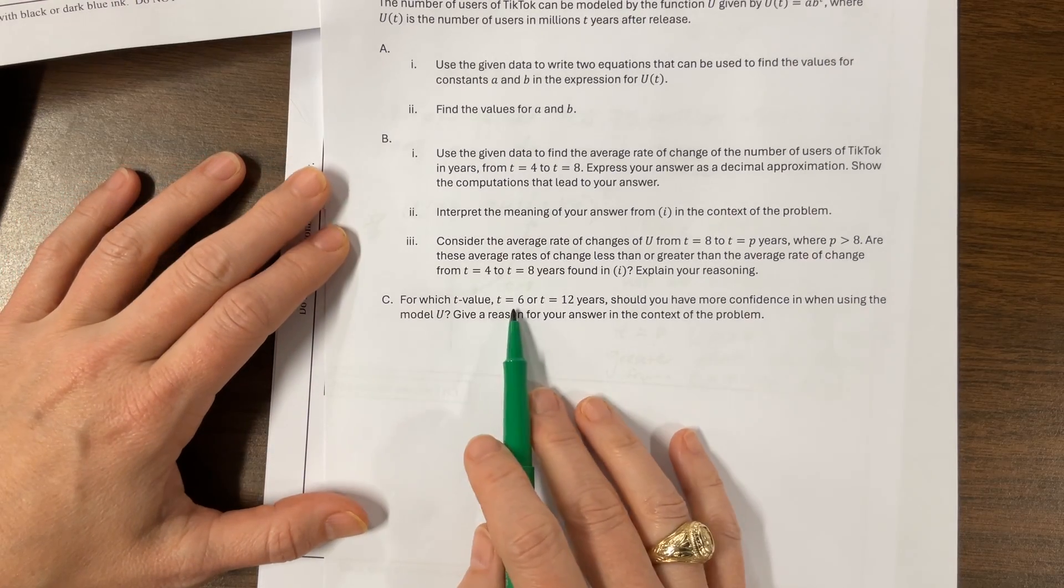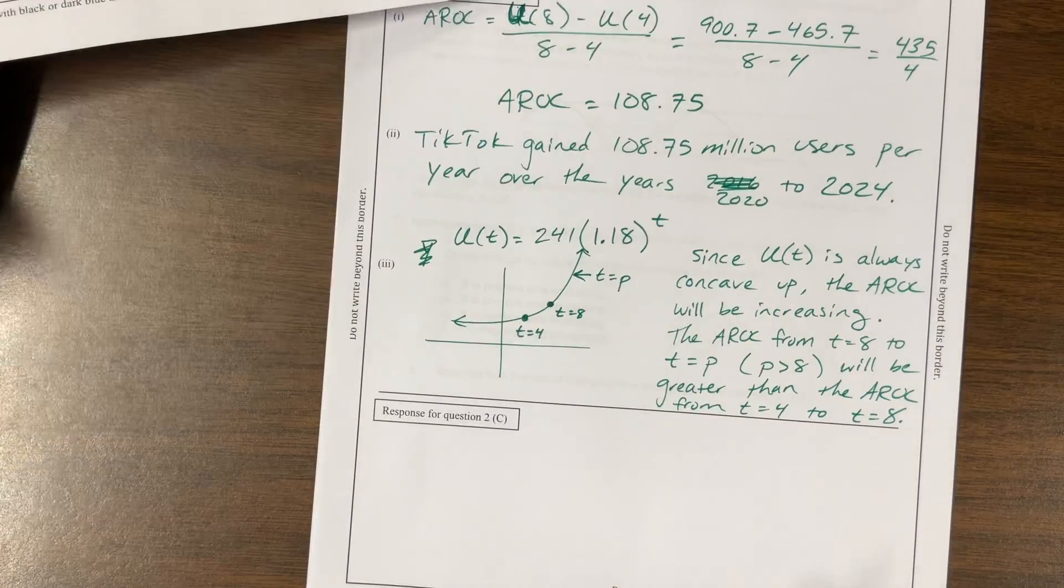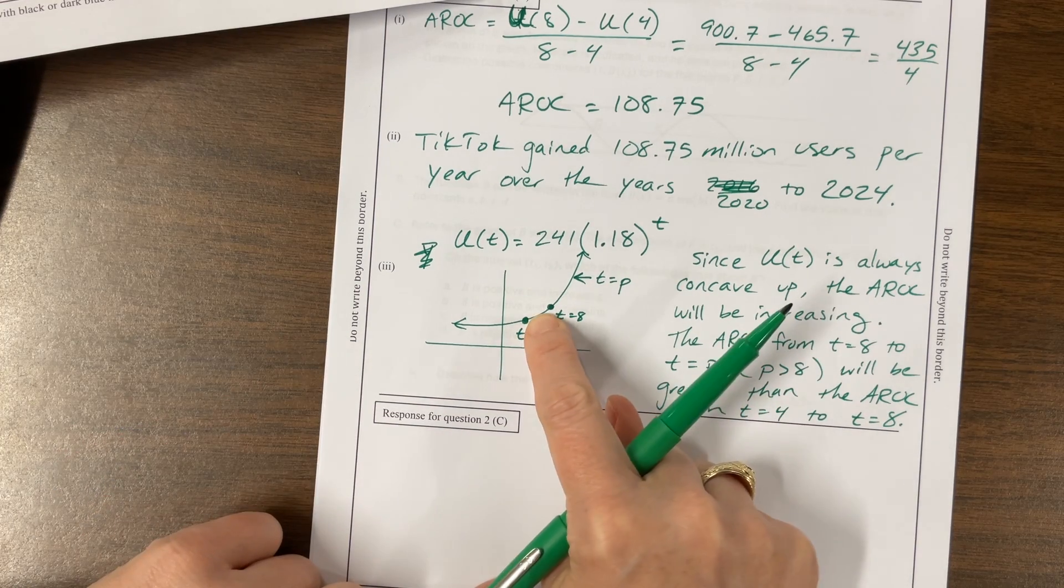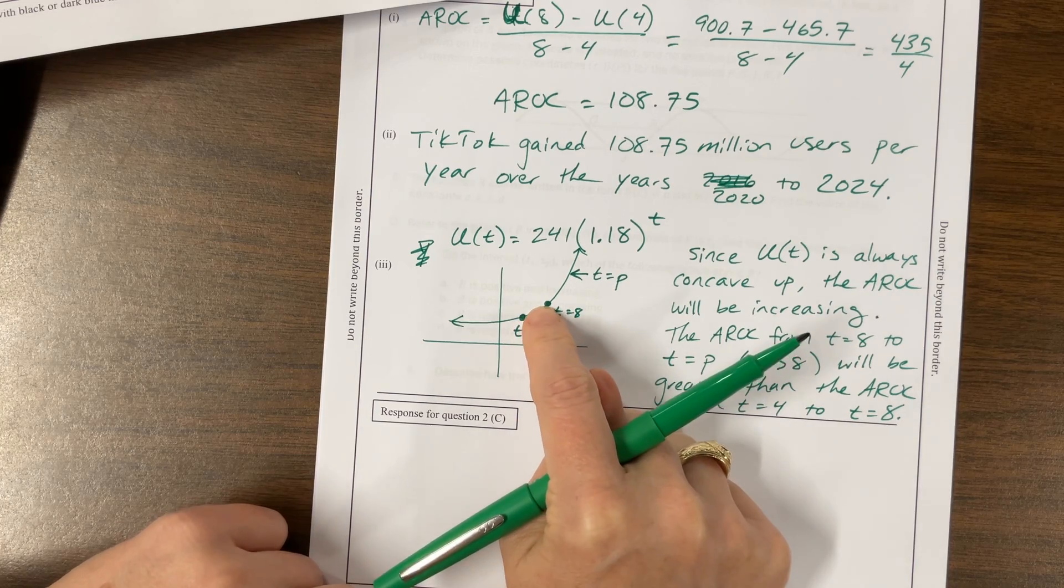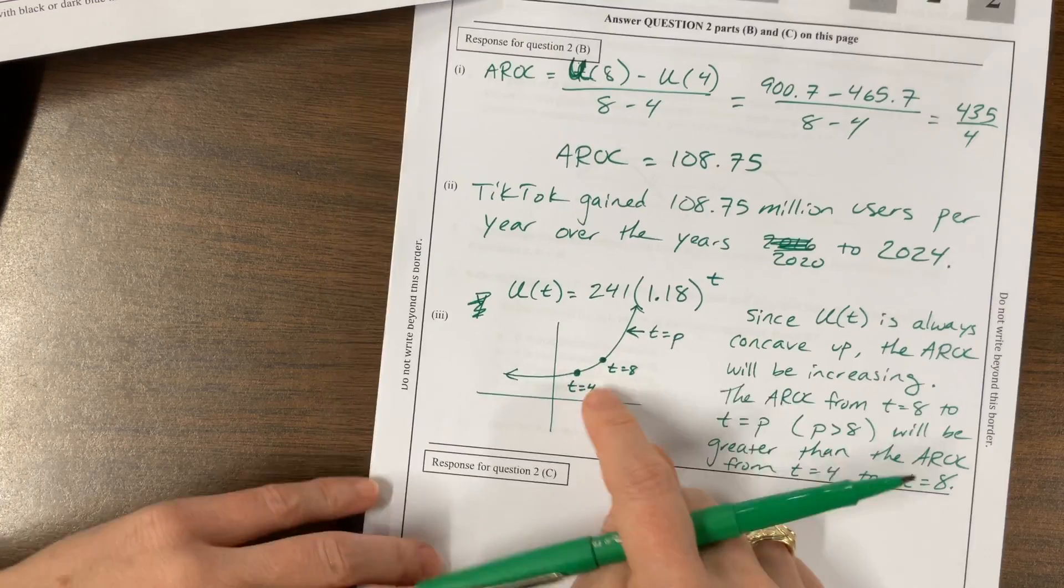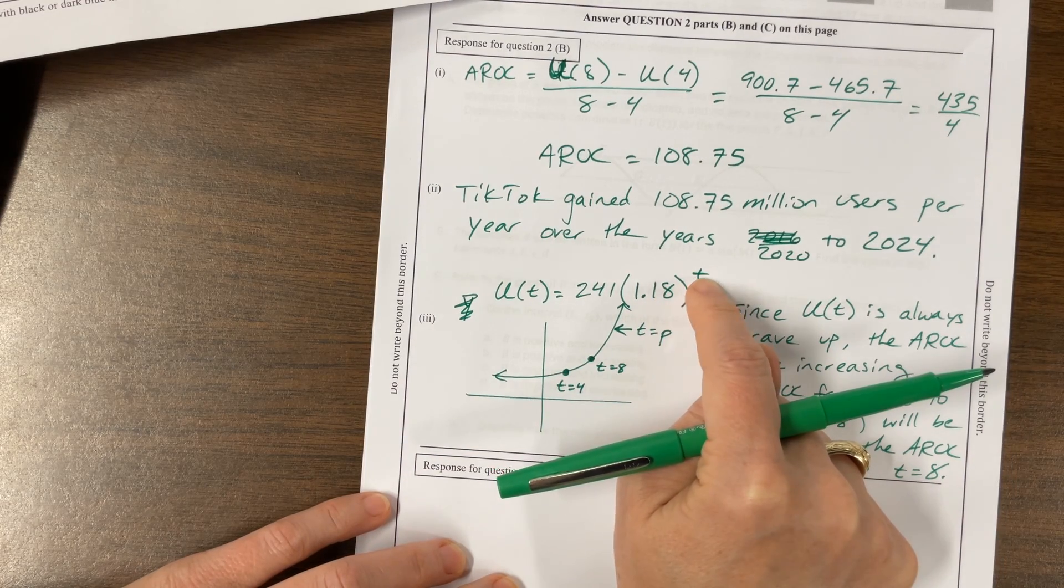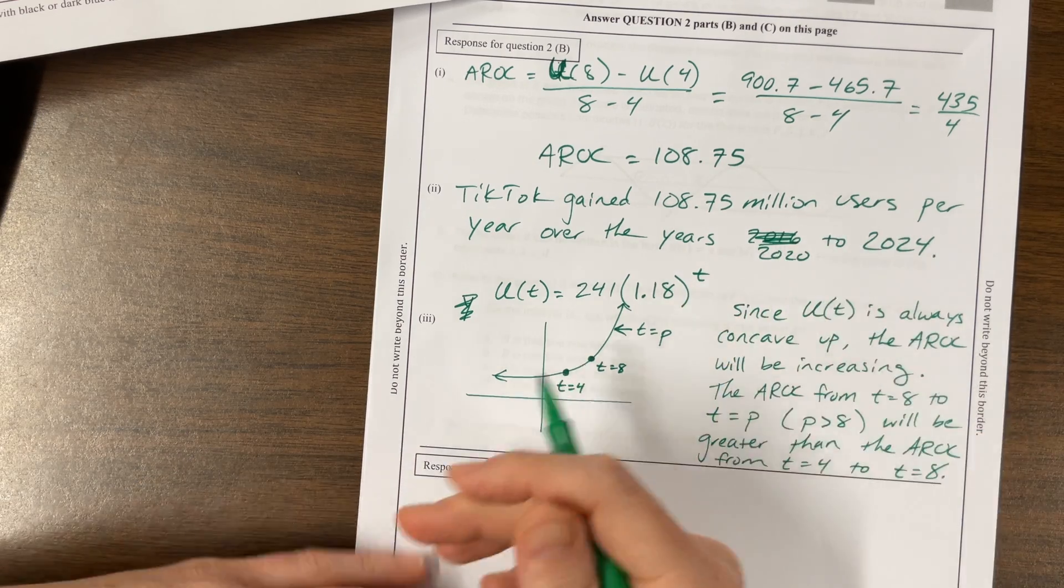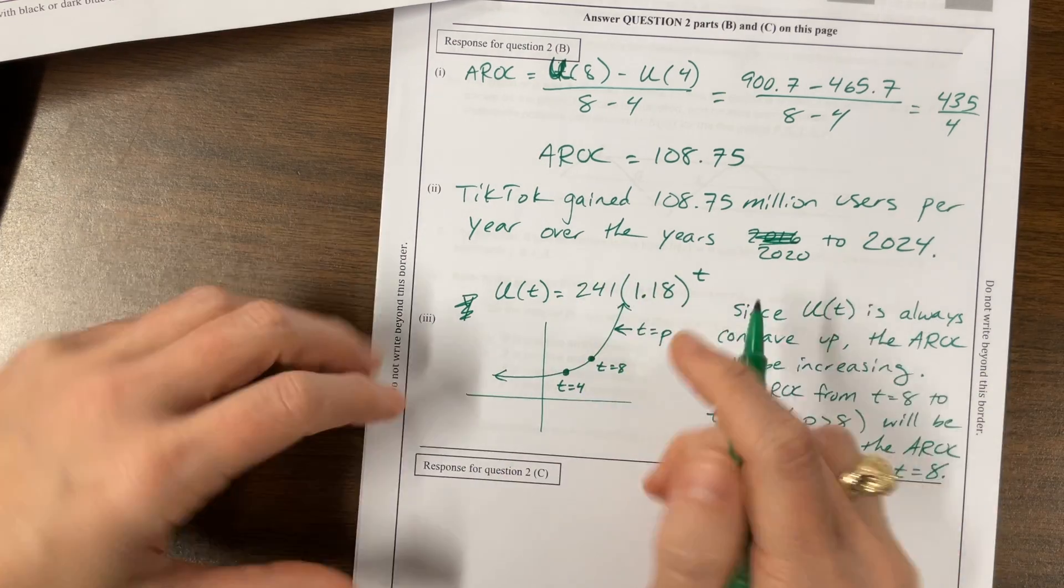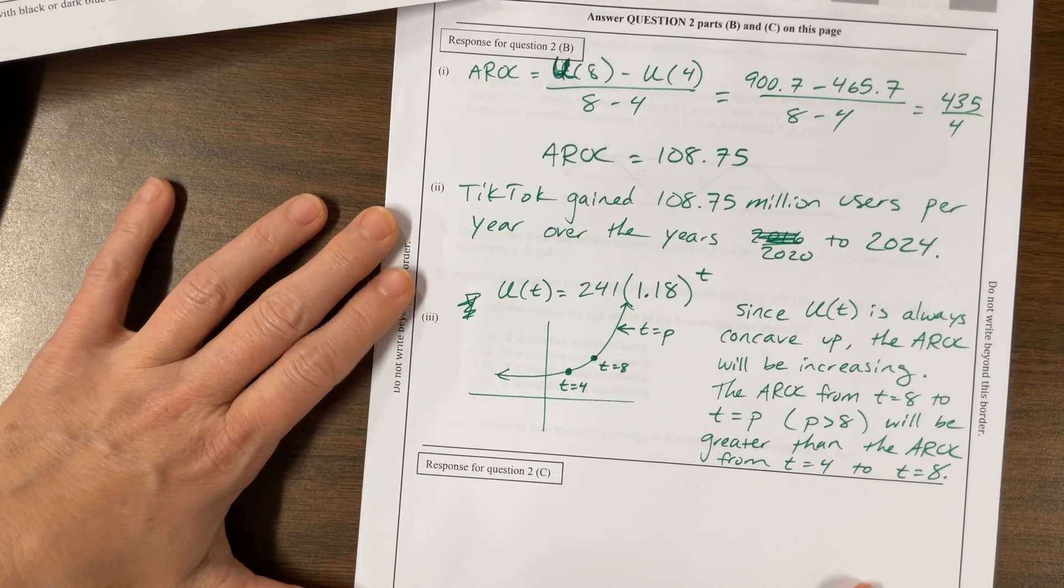For which T value, six or 12, should you have more confidence with using the model U? Give a reason for your answer. So our thought on this one, if I'm here at six, I know the data for four. I know the data for eight. So I think that using T equals six is reasonable. This equation, it may not be perfect if I plugged in six right here, but I have reason to think that this is reasonable. It's going to be close to the actual data.